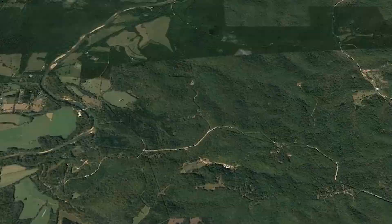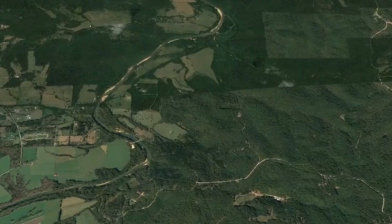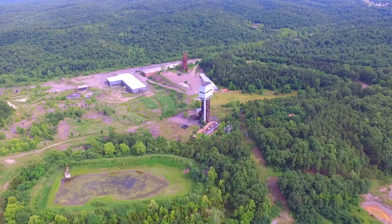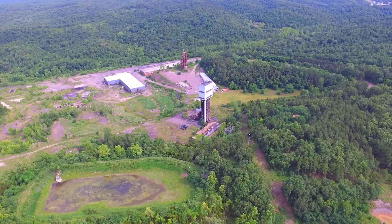The Pea Ridge mine is located near the town of Sullivan in southeastern Missouri. The mine produced high-grade iron ore concentrate as high as 70% magnetic iron from 1964 until 2001.